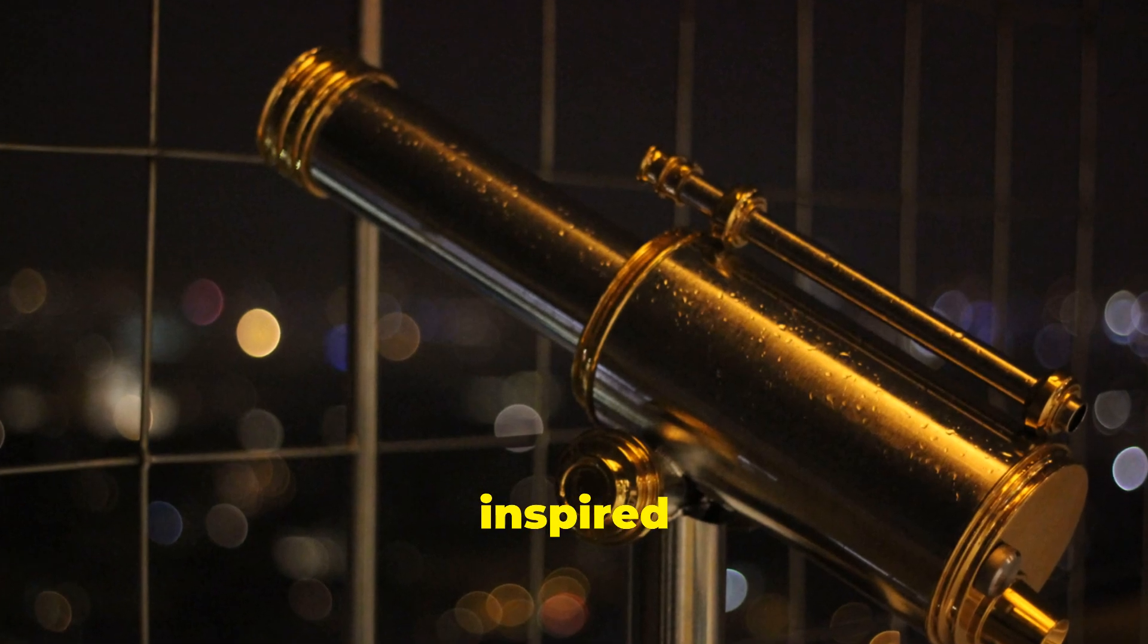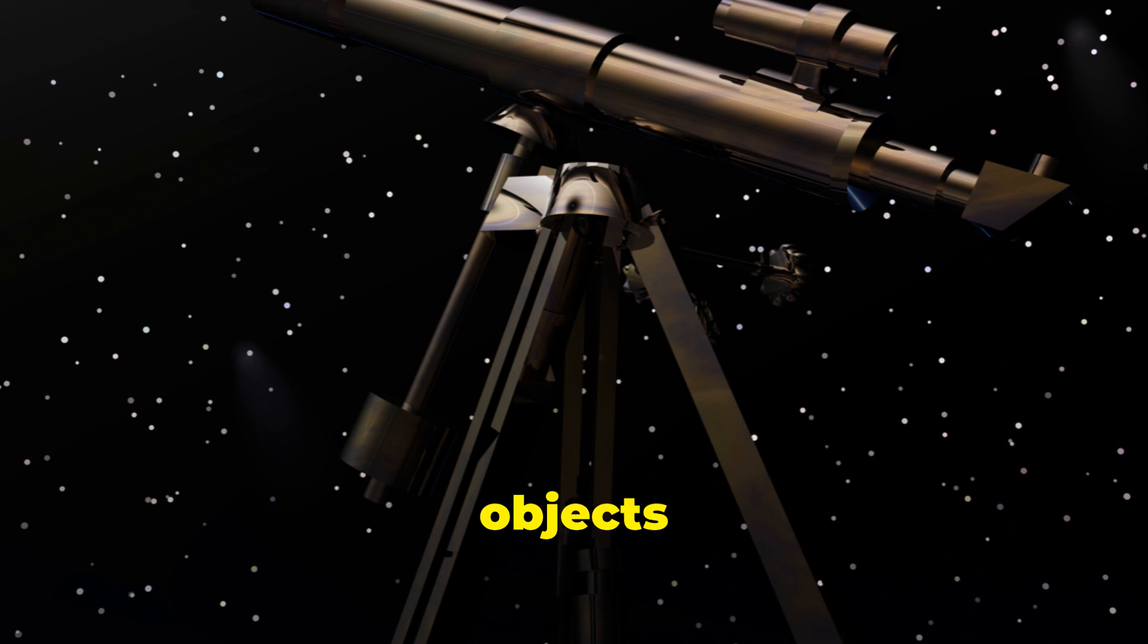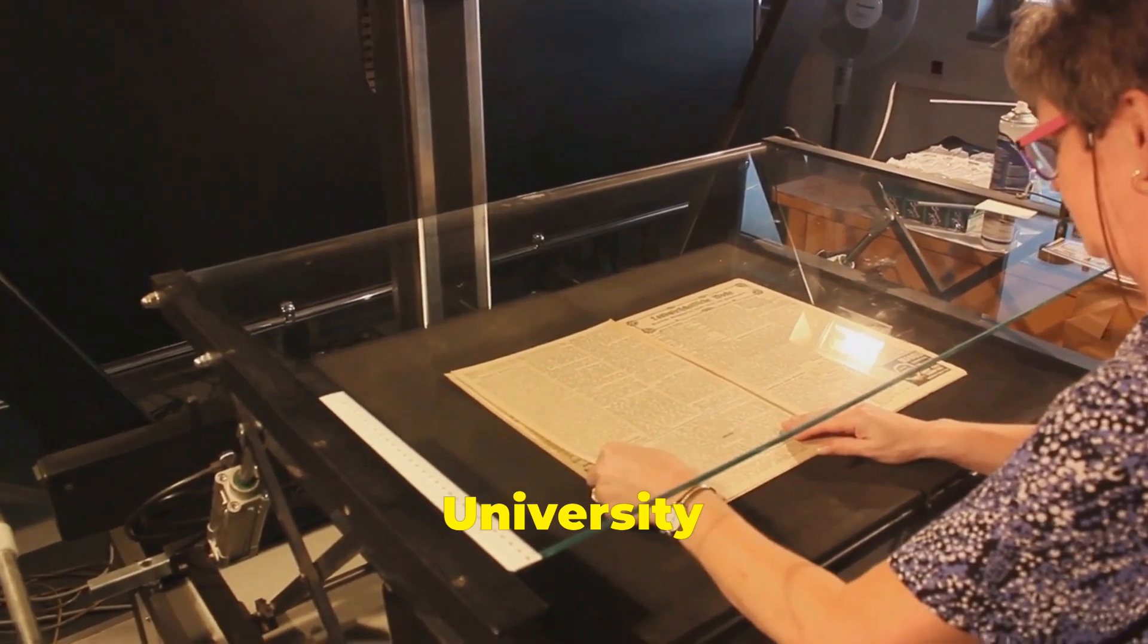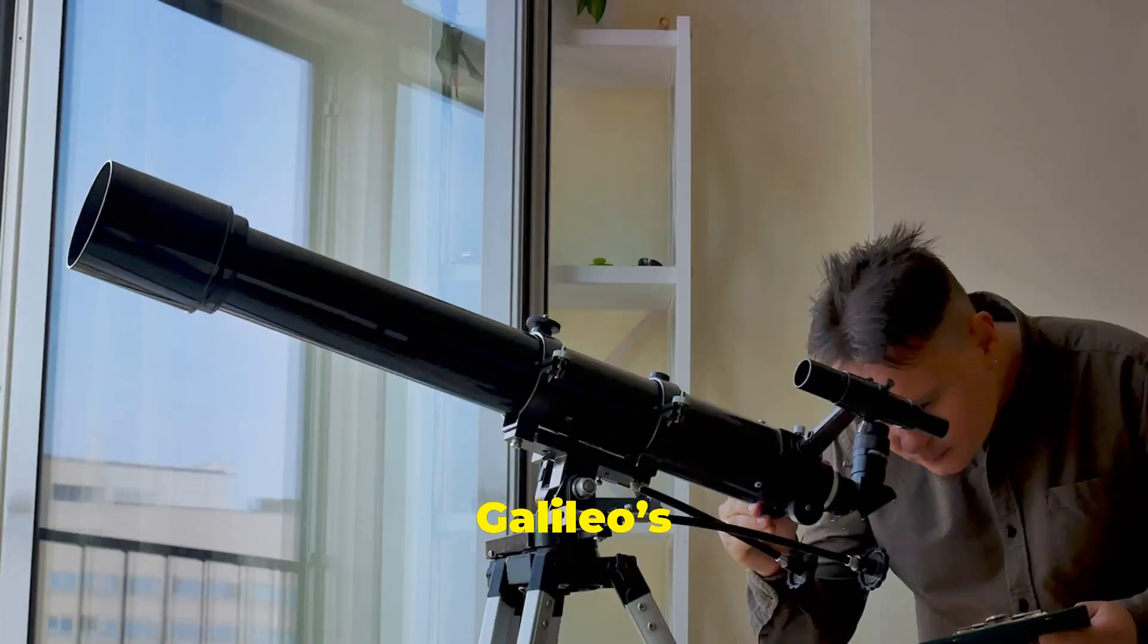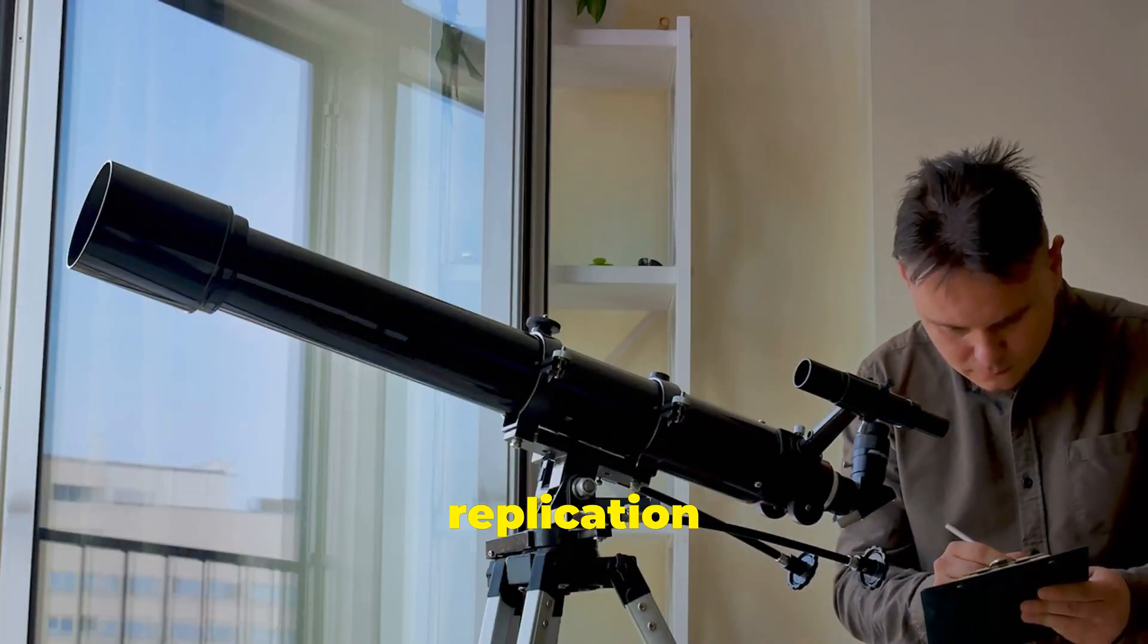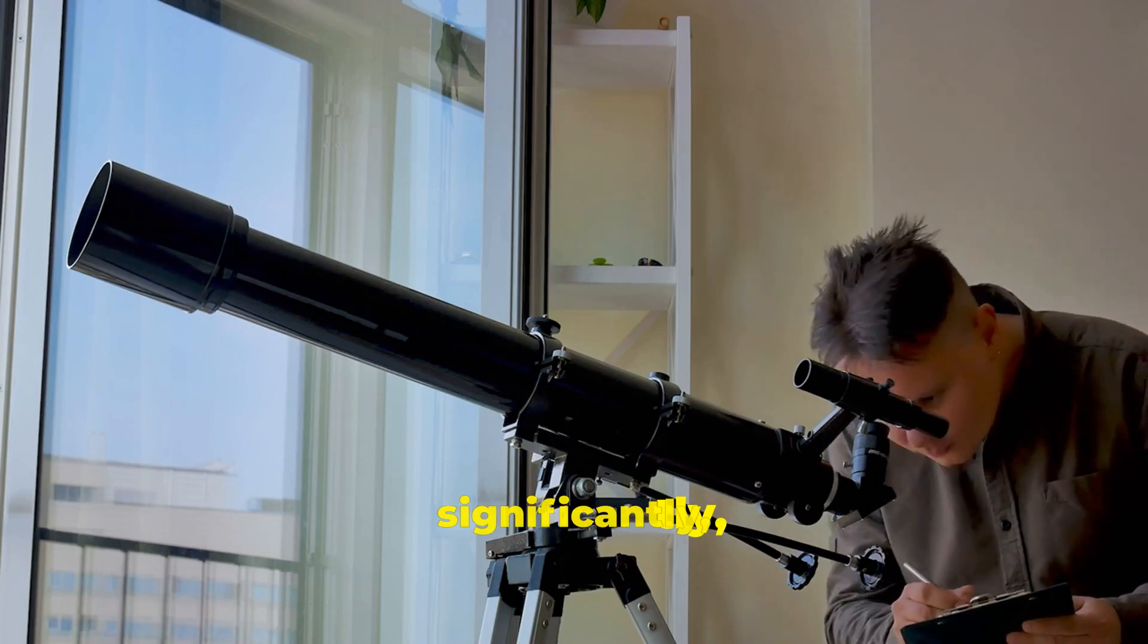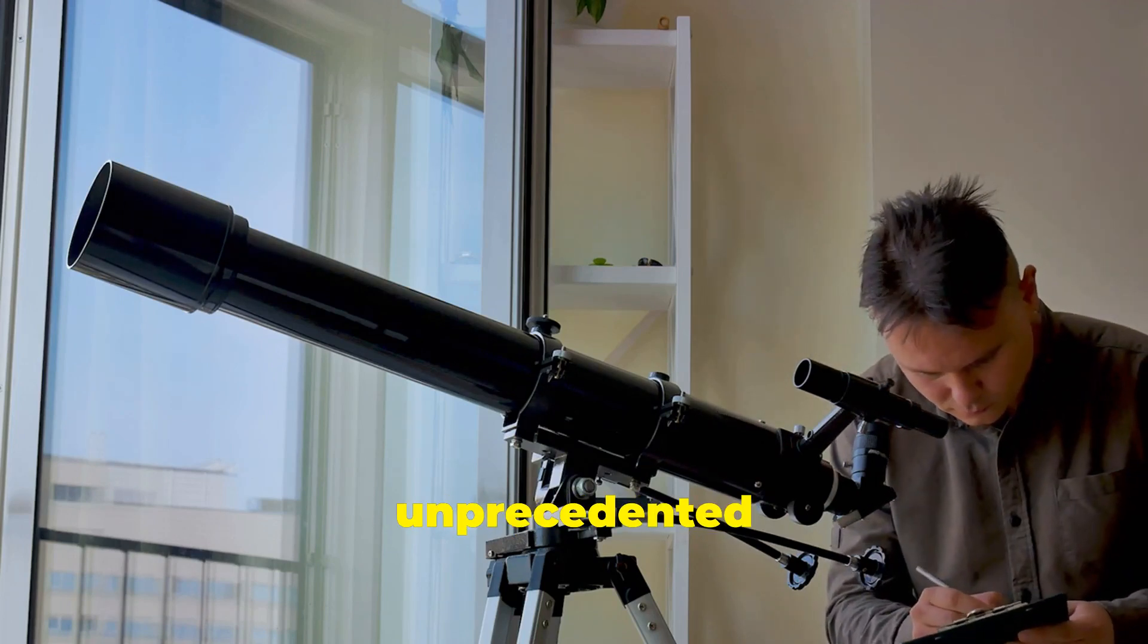In 1609, inspired by reports of a Dutch spectacle maker creating a device that made distant objects appear closer, Galileo, a professor of mathematics at the University of Padua, decided to develop his own version. Galileo's genius lay not just in replication, but in enhancement. He improved the magnifying power of his telescope significantly, from a modest three-fold increase to an unprecedented thirty-fold.